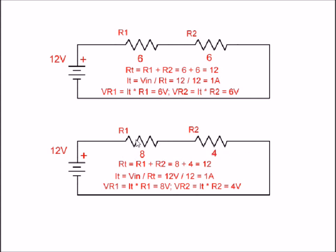If you add the voltage drop across R1, 8 volts in this case, and R2, 4 volts in this case, 8 plus 4 is 12. So, the voltage drop across the individual elements in a series circuit always add back to the source voltage.